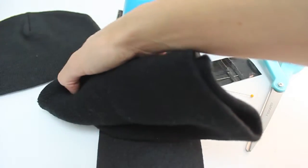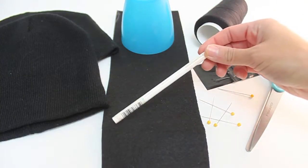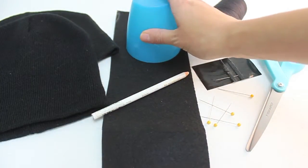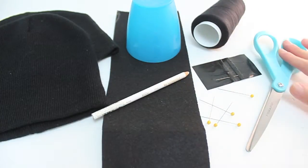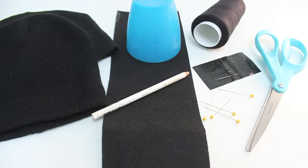For this tutorial you are going to need two beanies. You're also going to need some stiff black felt, a pen or marker which you can mark with, a cup that's the width of the ears that you want, some thread, some scissors, some sewing pins, and of course a needle.